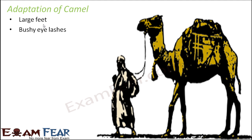Camels have bushy eyelashes — their eyelashes have many hair-like structures that prevent sand from entering their eyes. In the desert, sand blows from one place to another due to the lack of trees, and sand particles entering the eyes can cause irritation or infection. Camels cannot wear sunglasses, so this natural adaptation — bushy eyelashes — prevents sand particles from reaching their eyes.